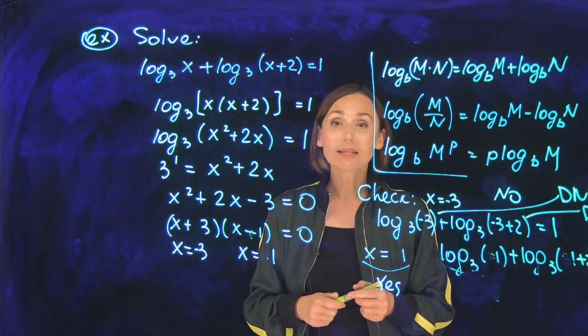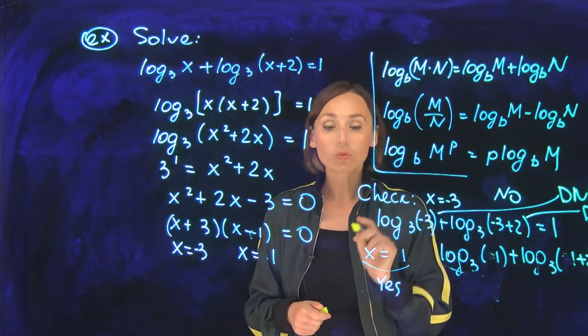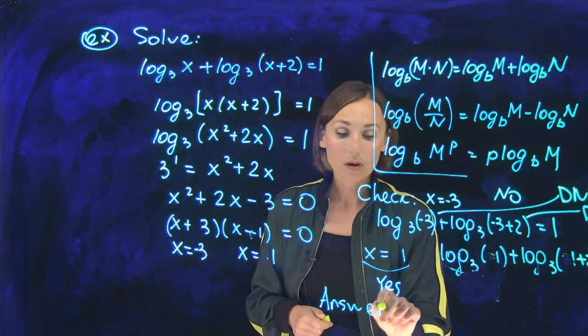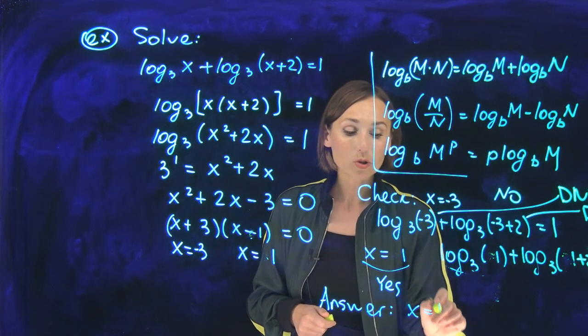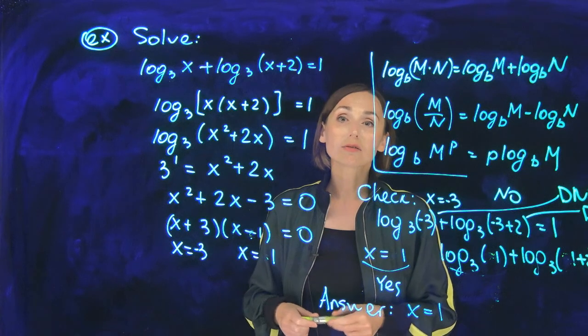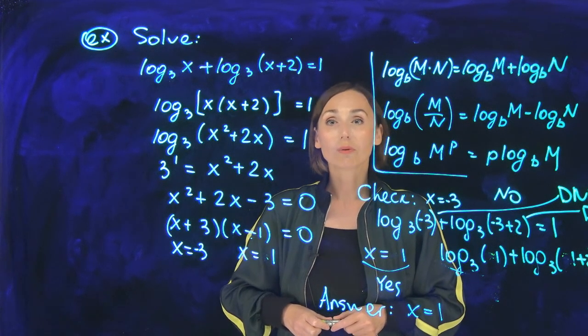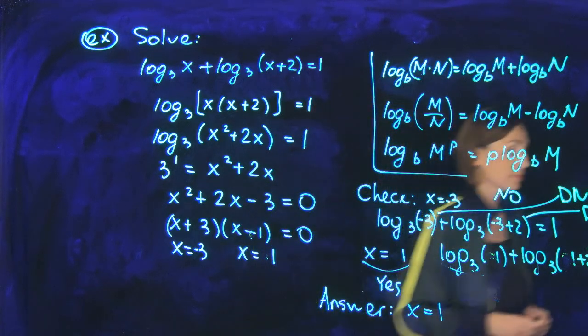So x = 1 is a solution, and this is the only solution. My answer is x = 1 because x = -3 is not in the domain of the original equation.